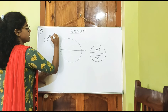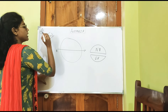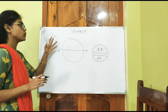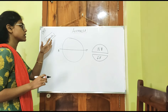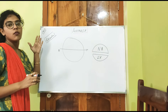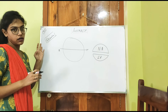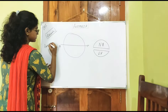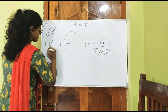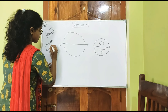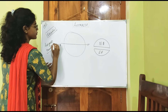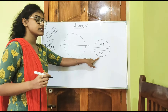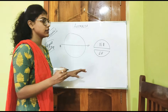Oceania is actually the continent, and Australia is the country. Australia is the largest country in Oceania. And this Australia is located in the Southern Hemisphere.